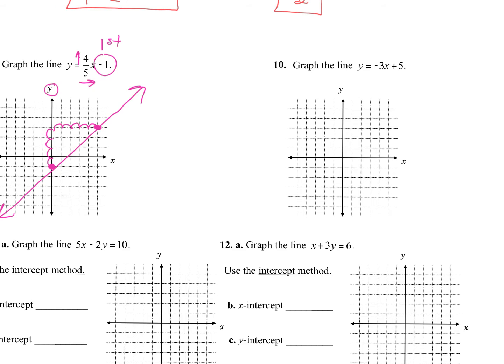For number 10, where do I go first? Up five for the y-intercept — remember, some of you are going to put it on the x-axis on the quiz, don't do it. Then for a slope of negative 3, treat it like a fraction: down three, to the right one. You can do it again — down three to the right one. You get this line.